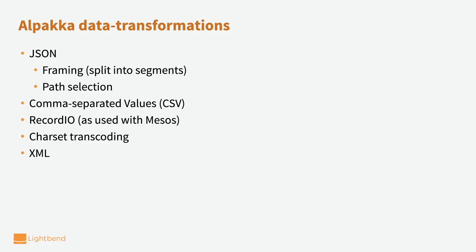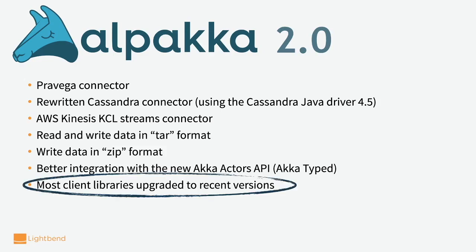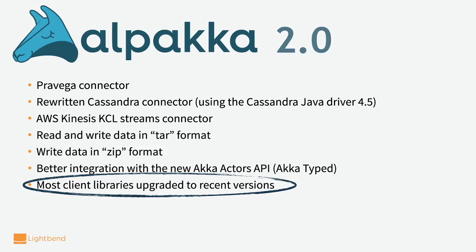A different area in Alpaca is data transformation — going from one format and mapping it to another. With this, I want to close this short overview of Alpaca 2.0 and list a few of the major functionality improvements Alpaca contains. The most important reason we call it 2.0 is the upgrade of most of the libraries, so that you don't get a transitive library at a different version than your code is using. Alpaca contains changes by more than 50 contributors. Thank you very much.